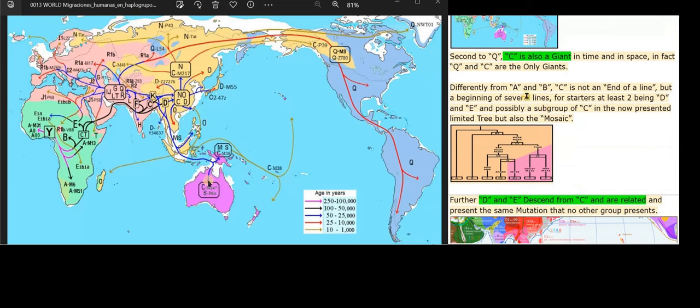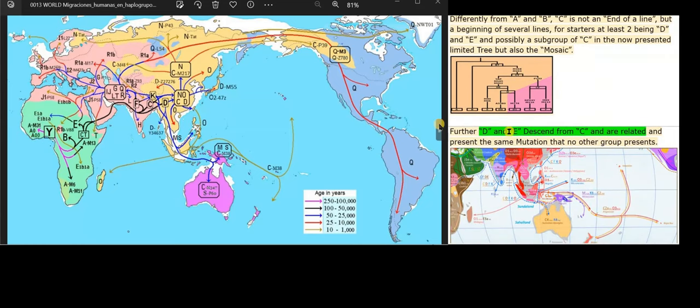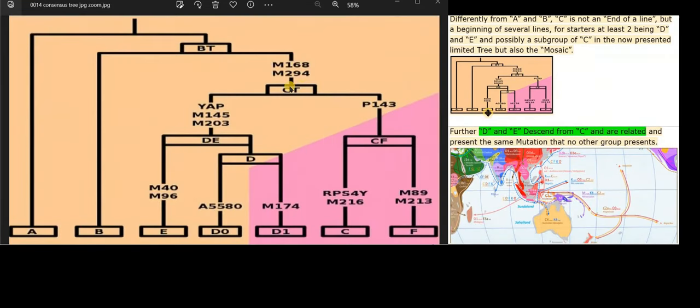Differently from A and B, C is not an end of a line, but a beginning of several lines. For starters, at least two being D and E and possibly a subgroup of C in the now presented limited tree, but also the mosaic.